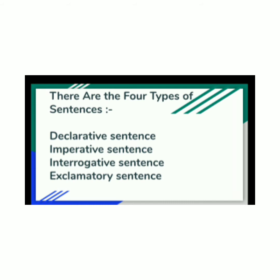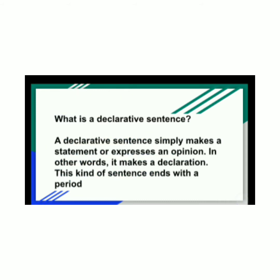What is a declarative sentence? A declarative sentence simply makes a statement or expresses an opinion. In other words, it makes a declaration. This kind of sentence ends with a period.